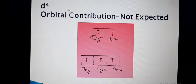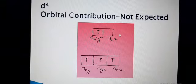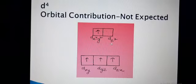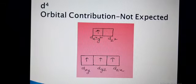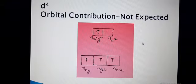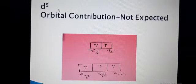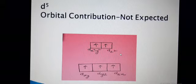For D4 configuration, the next electron goes to the EG level, specifically the dx²-y² orbital. The dx²-y² cannot be interconverted into the dz² orbital because of the difference in shapes, so the second condition is not satisfied and orbital contribution is not expected. For D5, orbital contribution is also not expected, as it also does not satisfy the second condition — the orbitals should have the same size and shape.